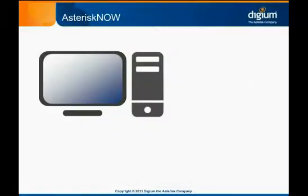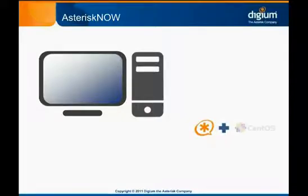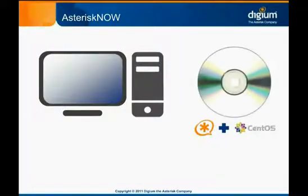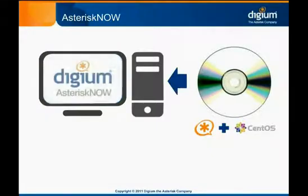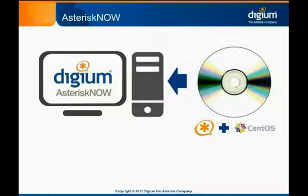The last Asterisk installation method we'll discuss involves the use of a software appliance. Digium offers a software appliance called AsteriskNow that includes not only Asterisk, but the entire Linux operating system. It's downloaded as an ISO from Asterisk.org, burned to a disk, and then used to install Linux and Asterisk on a server. It's called a software appliance because it's intended to be used as an all-in-one package that starts from scratch and ends with a fully functioning Asterisk server.